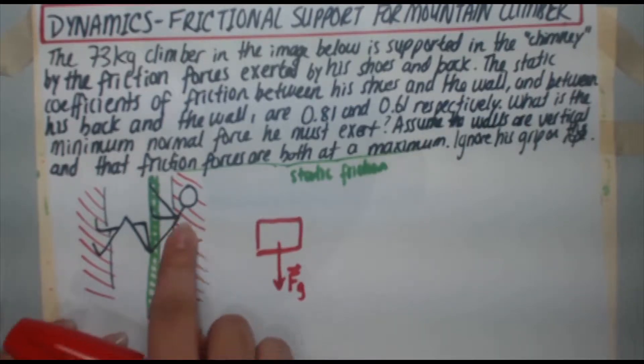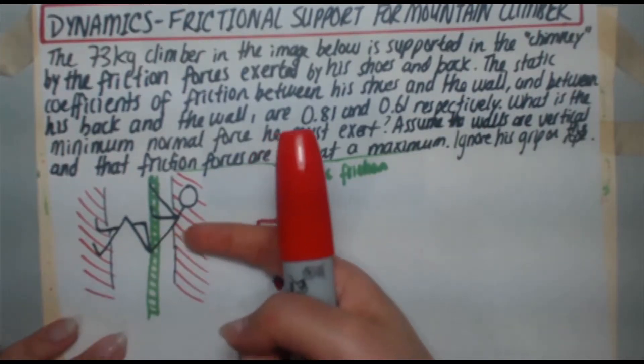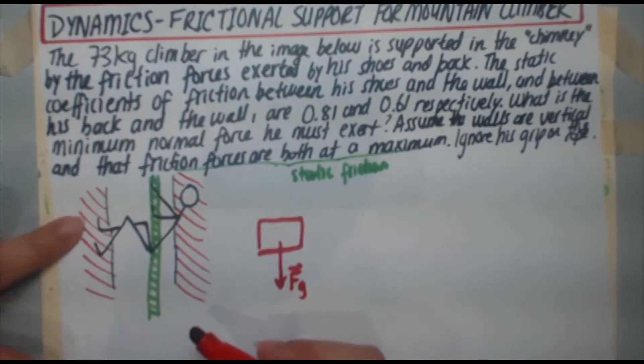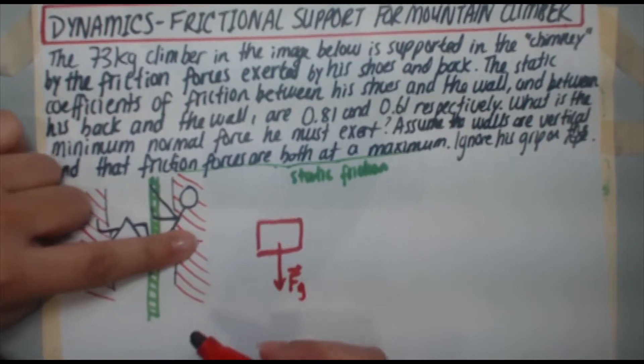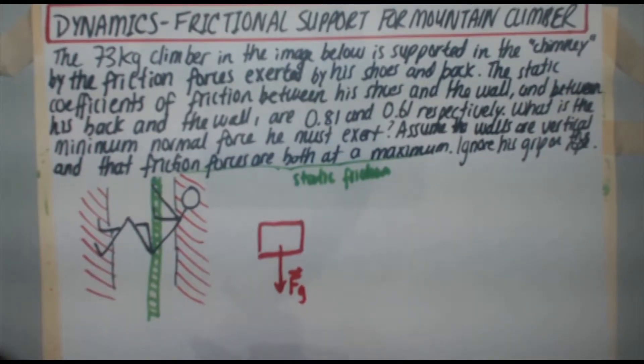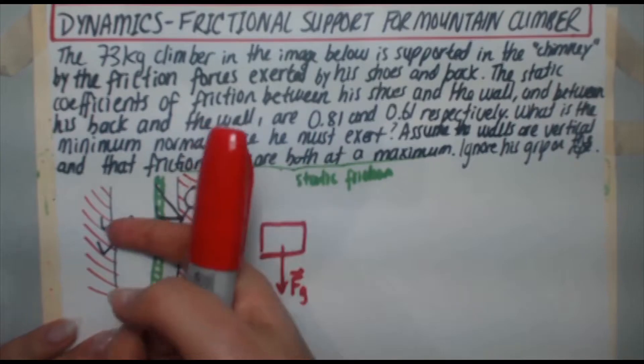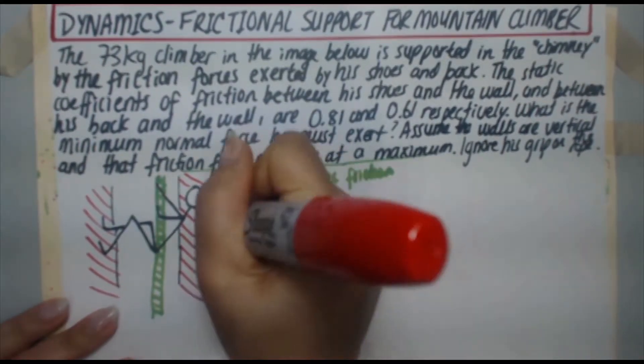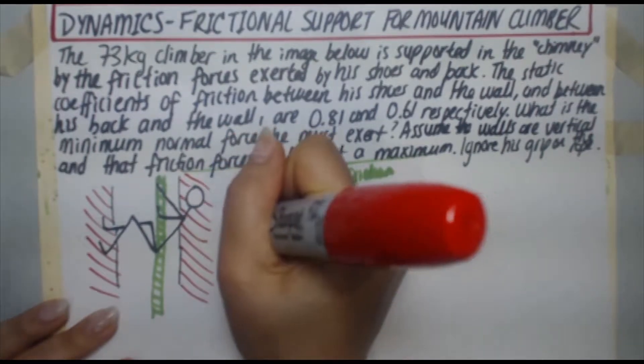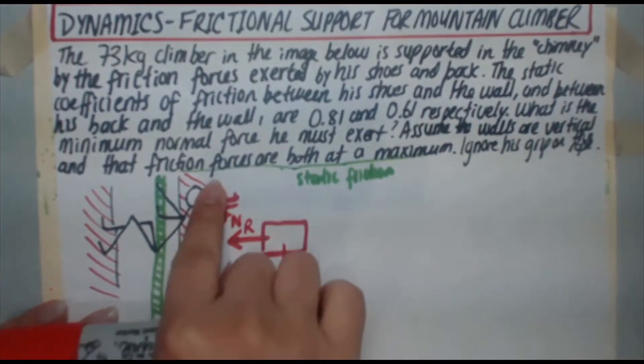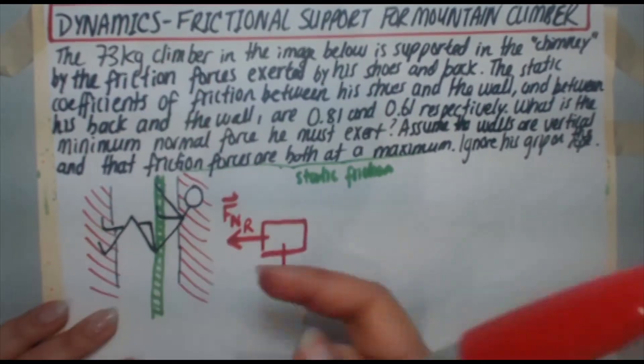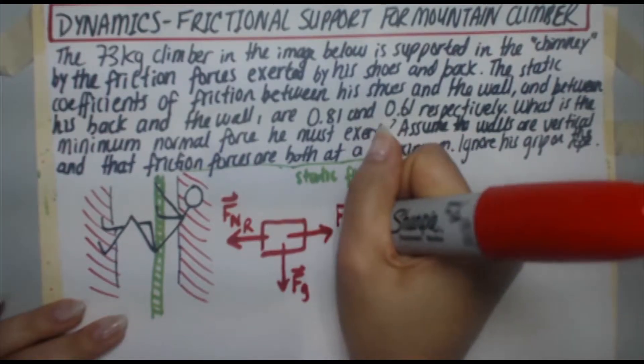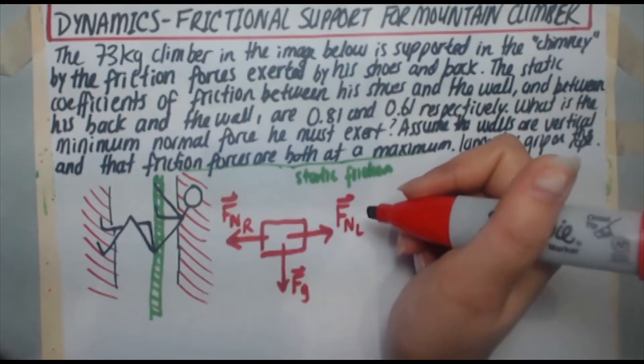So there's going to be the normal force from the right wall and that normal force is going to go towards the left. And the normal force of him pushing his feet on this wall, those normal forces are going to go toward the right. So we've got a normal force from the left and a normal force from the right. Going towards the left is the normal force from the right, and going right we've got FNL, normal force from the left.